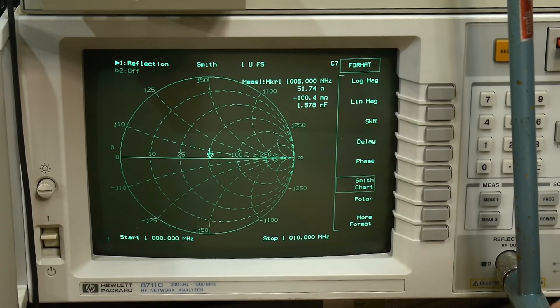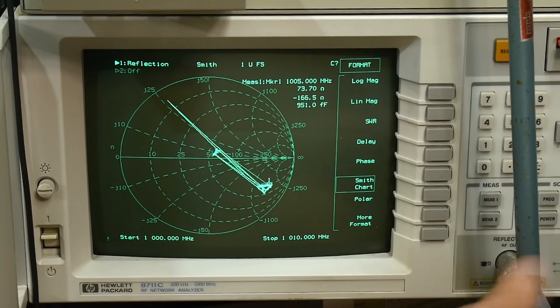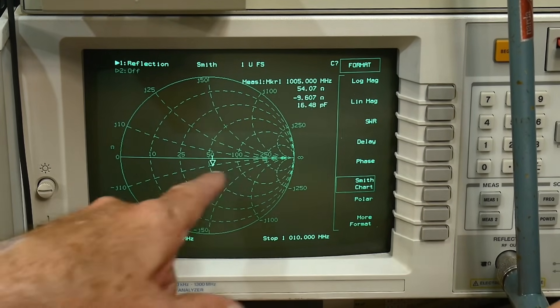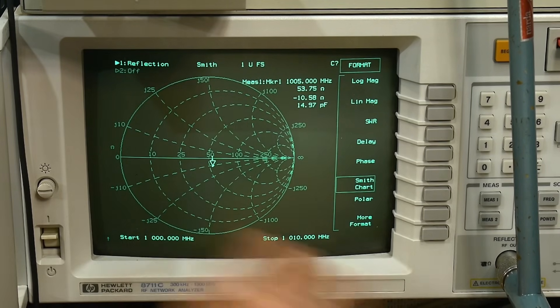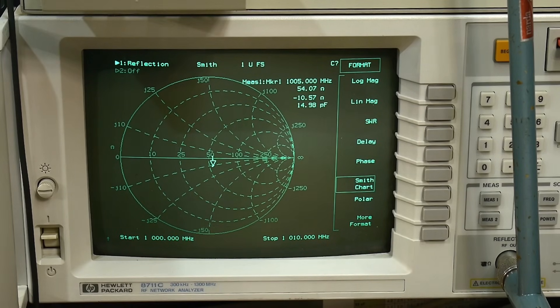So we've, if I take out that 40 ohms and I put the 50 ohm back in, we can see that we're way off again. Because that's kind of the negative of this one. It has to counteract it.